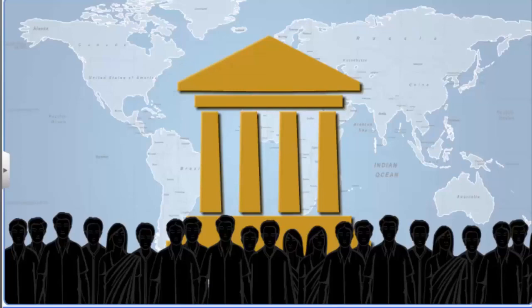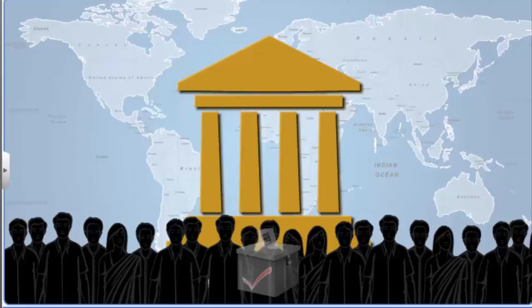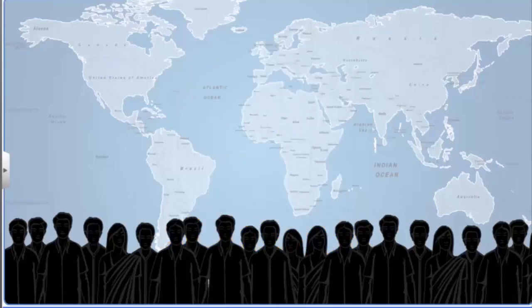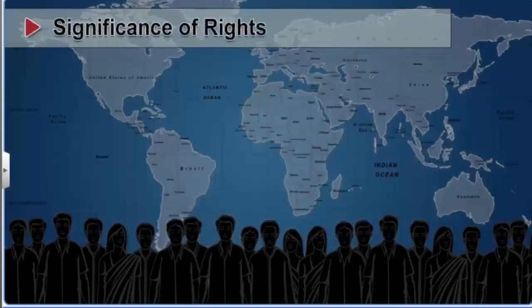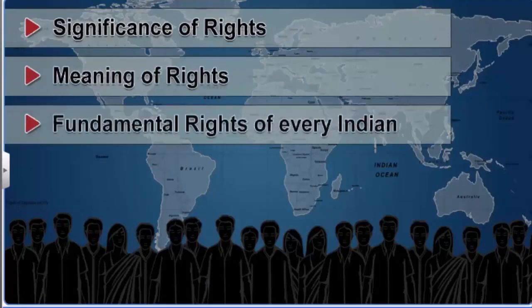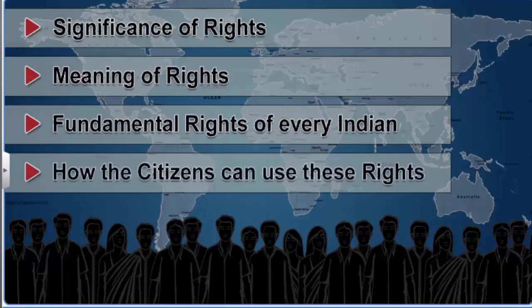In a democracy, the government is periodically elected by the people in a free and fair manner. However, a government fails to be a democracy if the people don't enjoy any rights. Therefore, in this chapter, we will focus on the significance of rights, the exact meaning of rights, the fundamental rights of every Indian citizen, and how the citizens can use these rights.